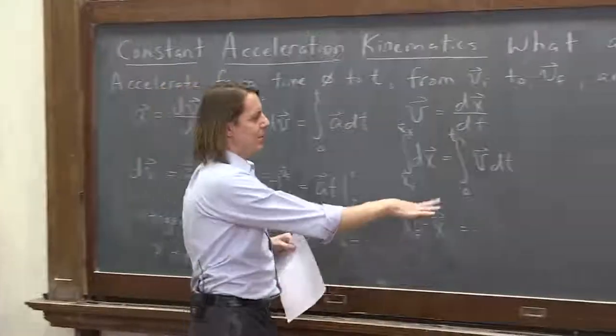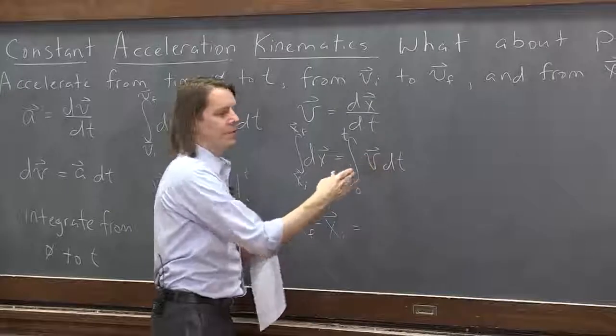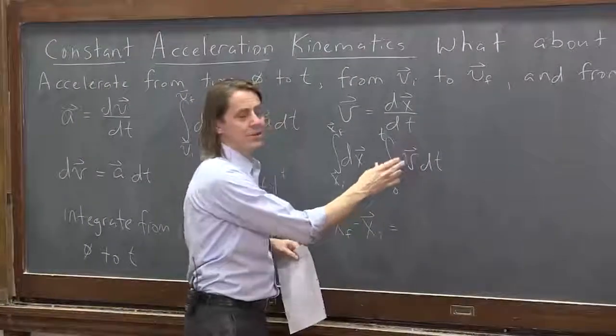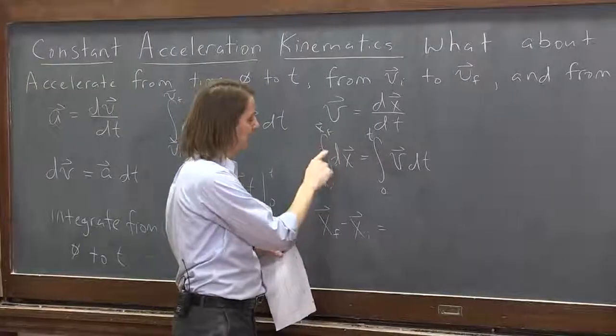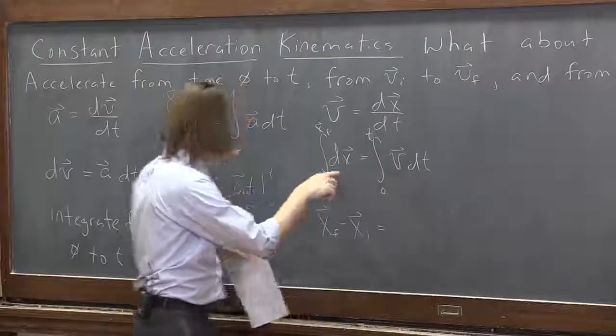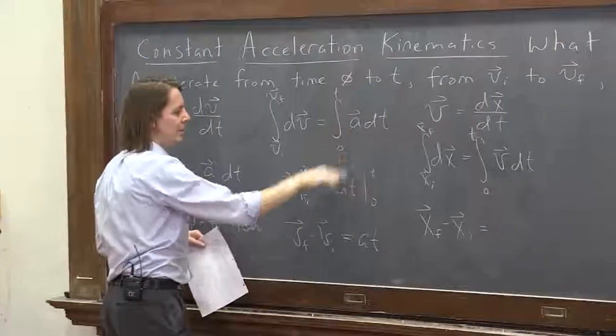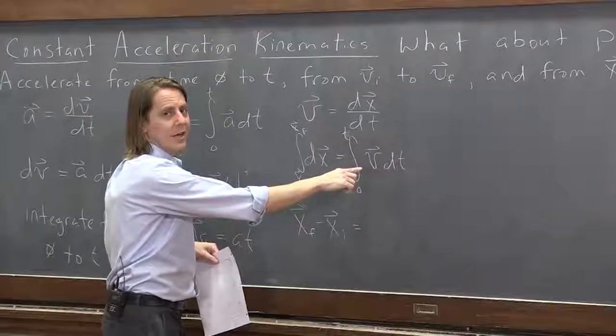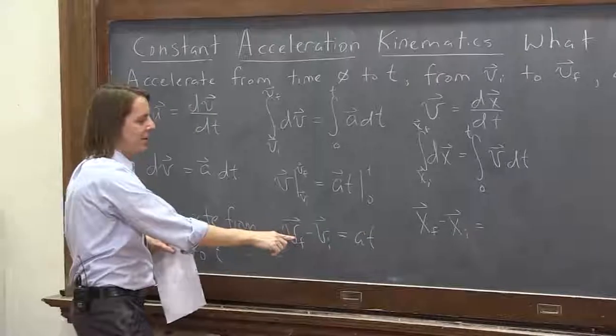And now, what about this integral? We just have a v there. Is it just vt? No. We just stick a t on there when there's a constant. All right. This was a 1, 1 times x. Here, a was a constant. So it just became at. But v is not a constant. v is changing in time. And we know how it's changing in time. Over here.